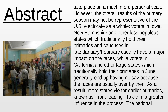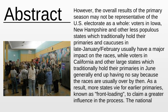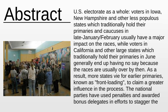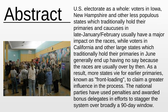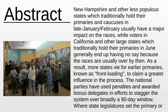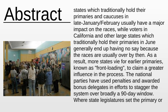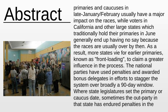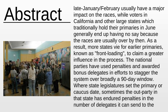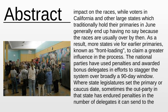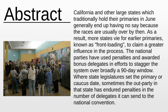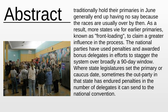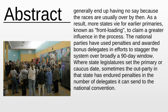However, the overall results of the primary season may not be representative of the U.S. electorate as a whole. Voters in Iowa, New Hampshire, and other less populous states which traditionally hold their primaries and caucuses in late January or February usually have a major impact on the races, while voters in California and other large states which traditionally hold their primaries in June generally end up having no say because the races are usually over by then.